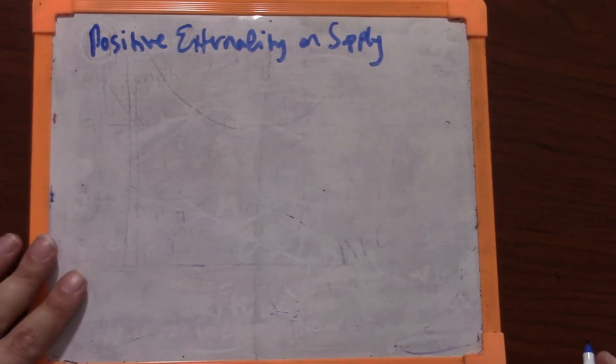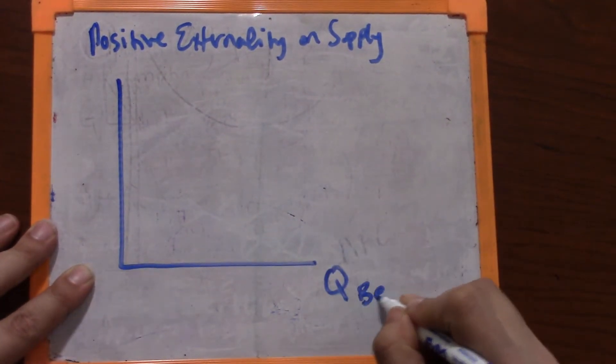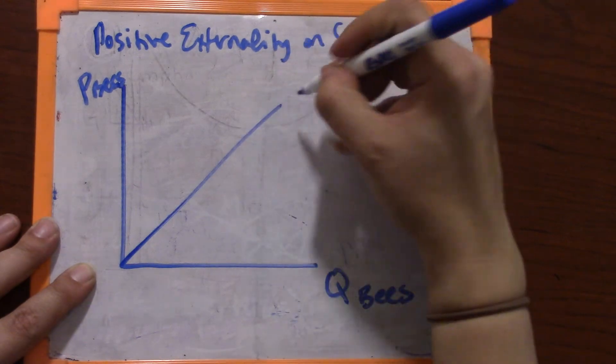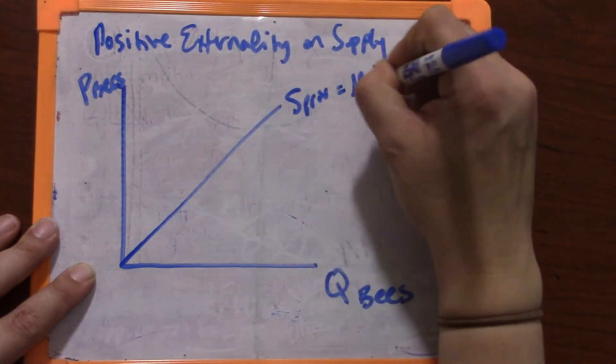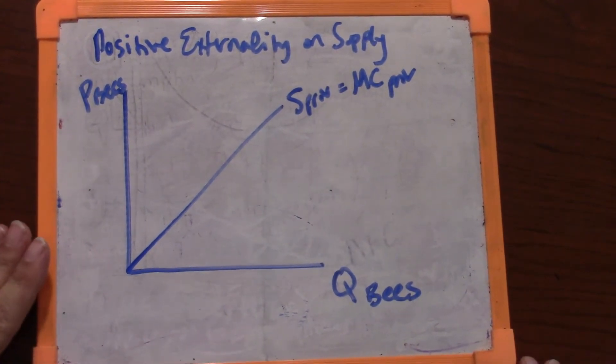So let's go back to our bee example. Let's think about a beekeeper who is keeping bees. This is the market for bees. There is some private supply of bees that's given by the private marginal cost. That would be things like the cost of the beekeeper of building the beehives, the beekeeping outfit, that cool hood and netting, the smoke that they use to subdue the bees when they need to harvest the honey.